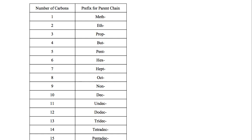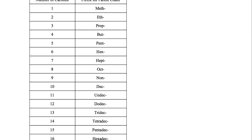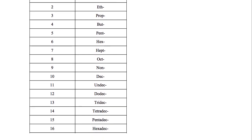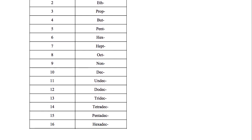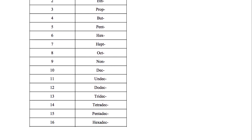Pent- is for five, hex- is for six, hept- is for seven, oct- is for eight, non- is for nine — so nonane — and dec- is for ten, like decane.